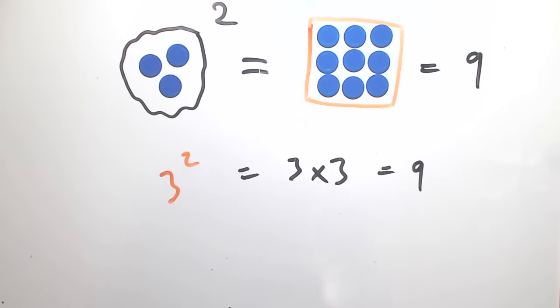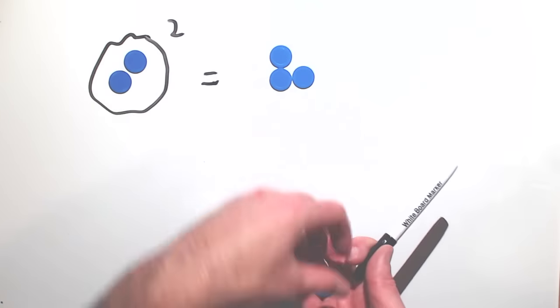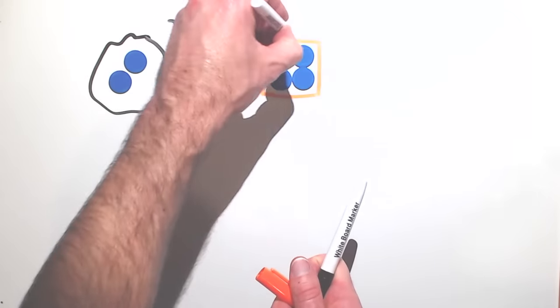Let's see if this pattern holds for another root number. Let's square two counters by making a square of side length two. This gives us a square of two rows of two counters with a total of two times two equals four counters.